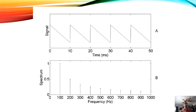Up at the top here we have a waveform view showing a good old sawtooth wave. Below this we see the spectrum view: a really nice fundamental at 100 Hz, and then partials at 200, 300, 400, 500, 600, 700, 800, and 900 Hz, all with significantly decreased amplitude from the fundamental.